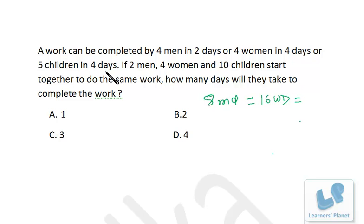Then 5 children will take 4 days to complete the same work. That means 1 child will take 5 into 4, which is 20 days. That means the work is of 20 children-days. So how do you interpret this expression? That means if 1 man does it, he will take 8 days to complete the work.